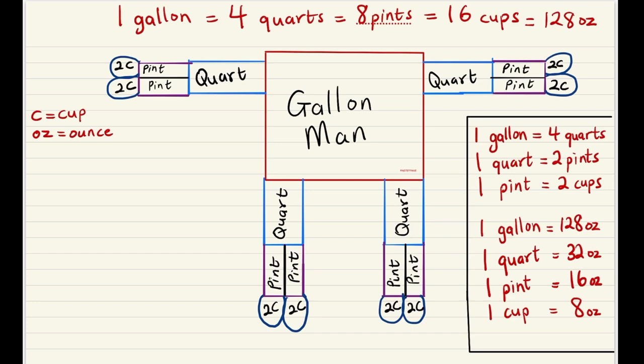As you can see from the diagram, there is the gallon man and the gallon man has four quarts. From the top I made an indication that says one gallon is equal to four quarts. So with the gallon man we can see it has one, two, three, four quarts. That means four quarts is equal to one gallon.